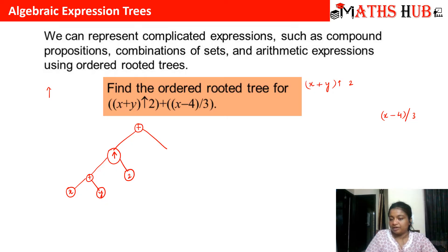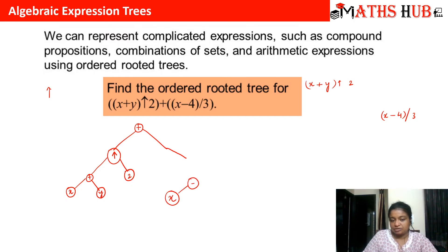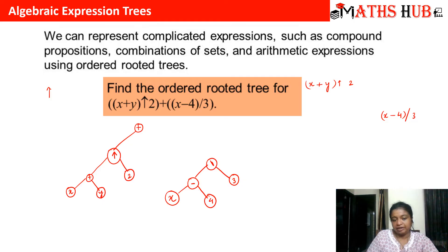For the right subtree, x minus 4 divided by 3: x is one vertex, minus is one vertex, 4 is one vertex, division is one vertex, and 3 is another vertex. We start with x, then the minus vertex joins x with 4. Then we have the divisor, and the expression is divided by 3. So the left subtree is (x + y)² and the right subtree is (x − 4)/3, both joined with the plus symbol.